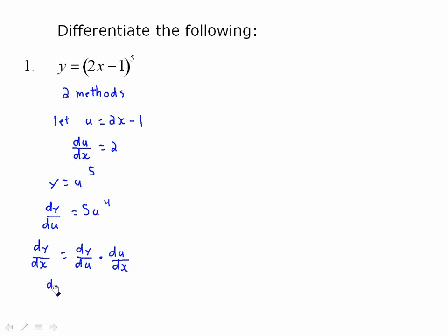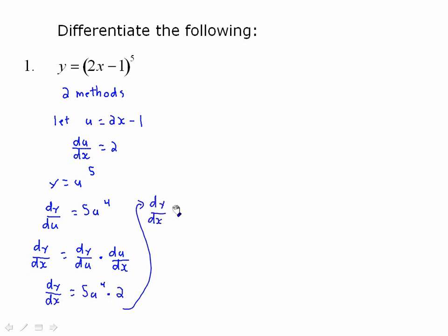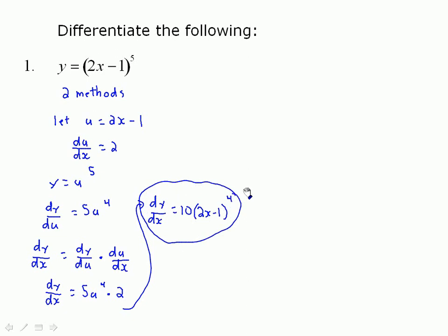Substituting back in: dy/du is 5u^4 and du/dx is 2, so dy/dx = 5 × 2 = 10, times u^4. Replace u with (2x − 1), giving dy/dx = 10(2x − 1)^4. That's a nice way to do it.